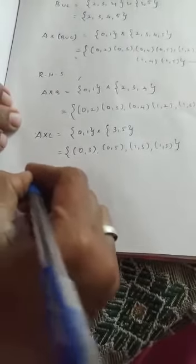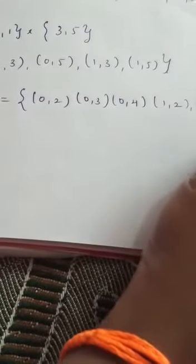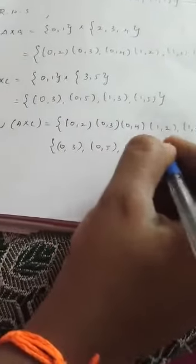So after writing this one, you are going to write it as union. A cross B union A cross C. Union means you are going to write them together: (0,2), (0,3), (0,4), (1,2), (1,3), (1,4) union (0,3), (0,5), (1,3), (1,5).